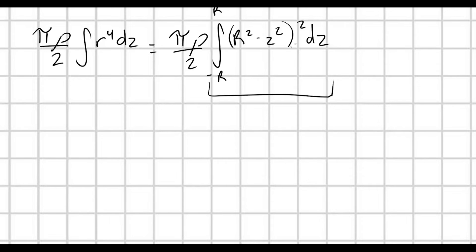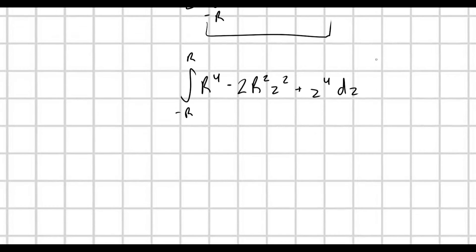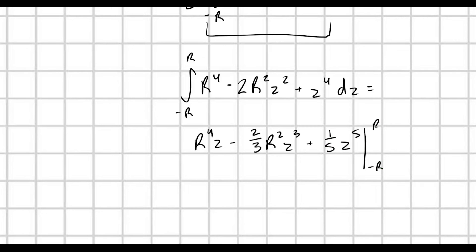Let's focus on this integral. First, I'm going to expand the square — taking (R² − z²) and multiplying it by itself — giving us the integral from −R to R of R⁴ − 2R²z² + z⁴ dz. This integral is going to be really quick — it's a nice easy polynomial. We get R⁴z − (2/3)R²z³ + (1/5)z⁵, evaluated from −R to R.